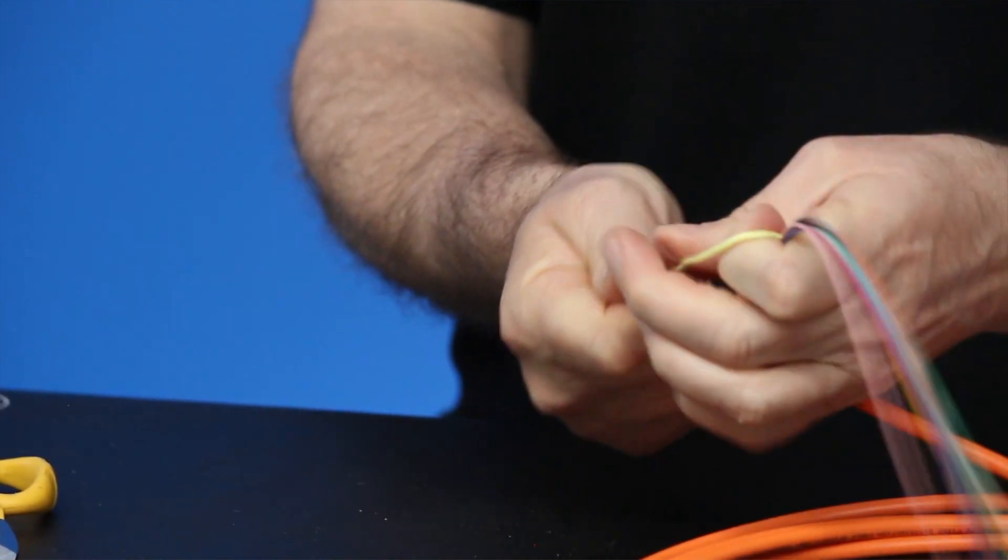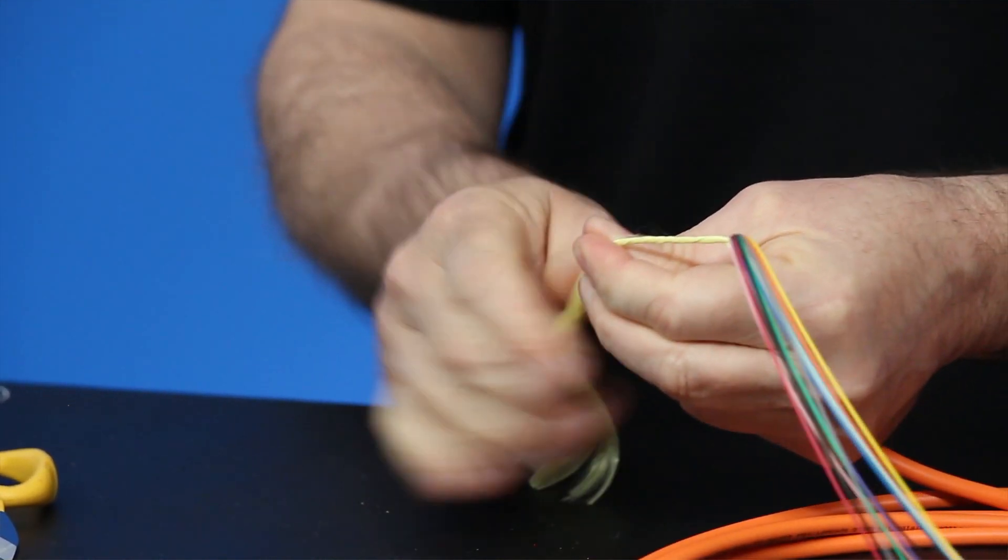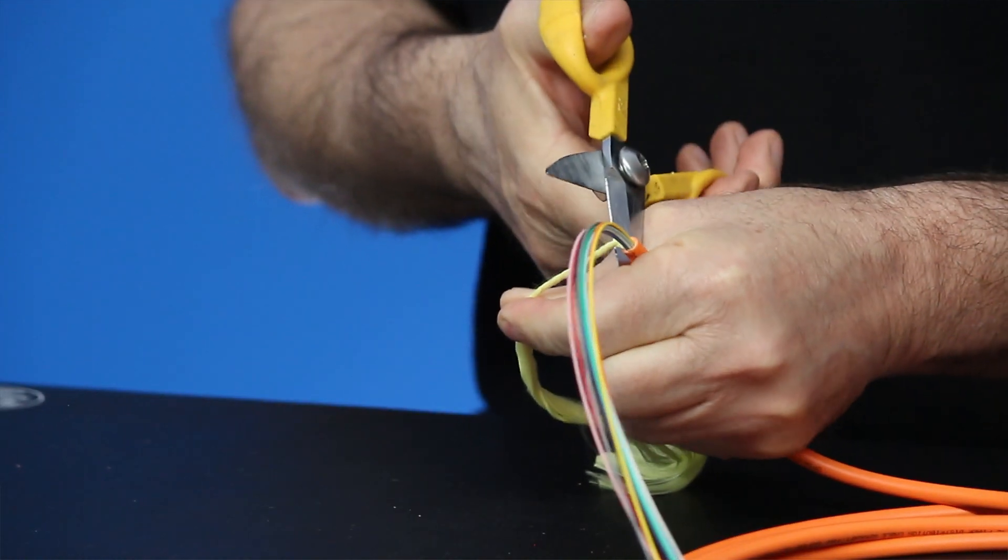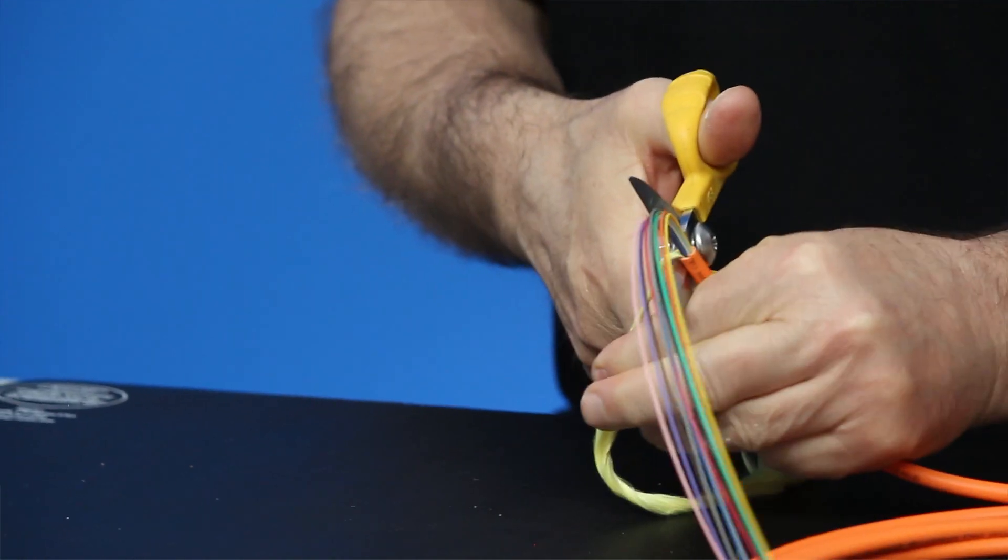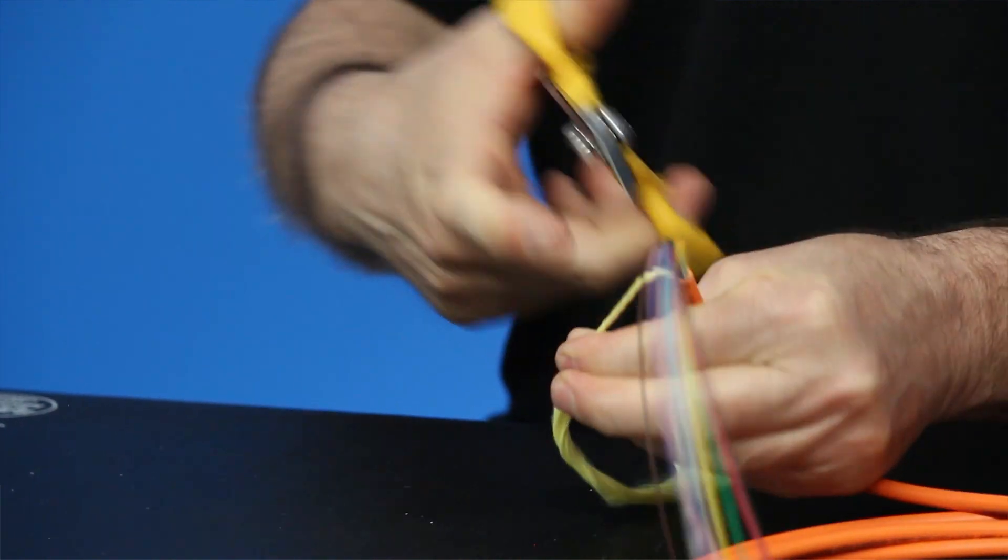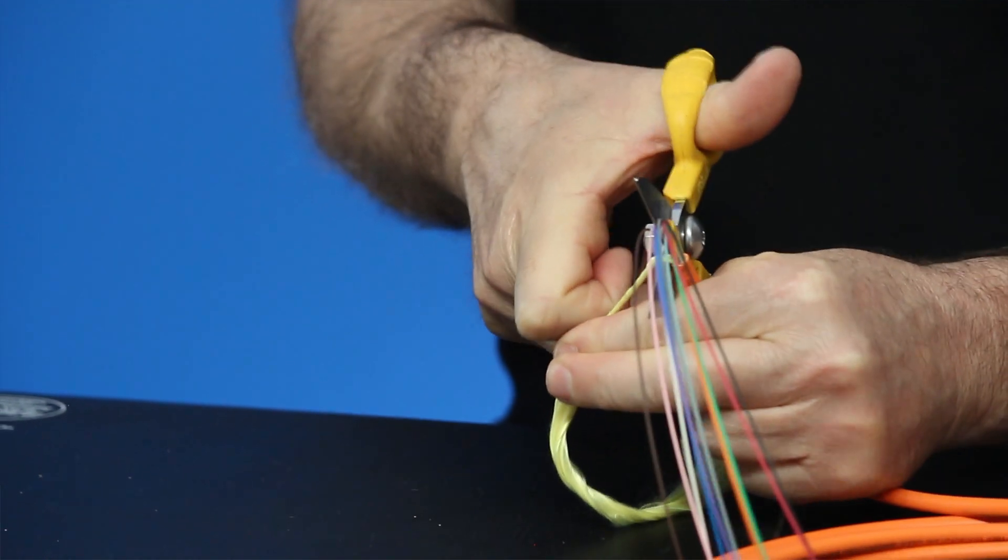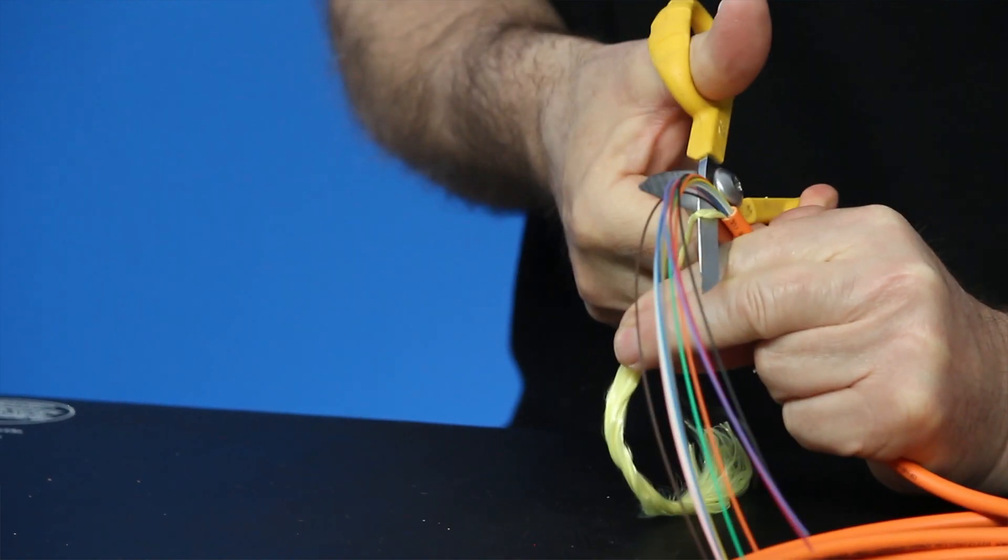You twist it up, hold it out of the way, making sure you do not cut yourself. You bring the shears in, and the closer you get it to the V, the easier it is to cut. Then you go through without cutting the fibers.